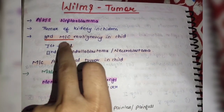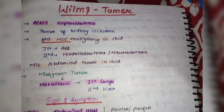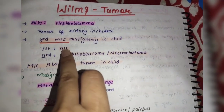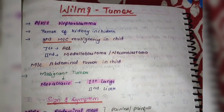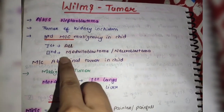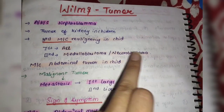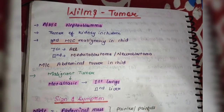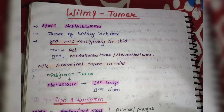ये third most common malignancy होती है child के अंदर. First होती है acute lymphoid lymphoma. Second होती है medulloblastoma या जिसको neuroblastoma भी कह सकते हैं. And जो third होती है, वो होती है Wilms tumor.